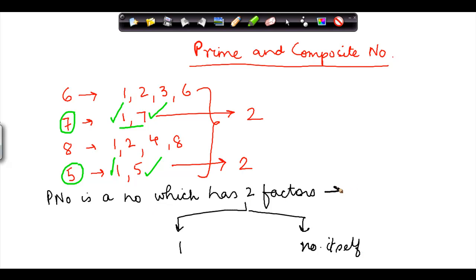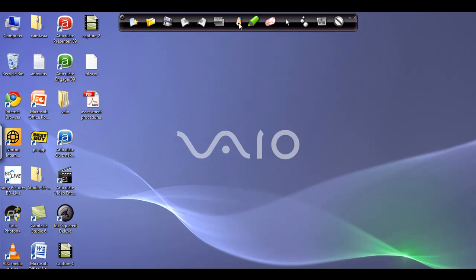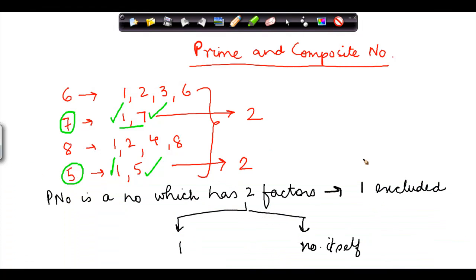Now when we say prime number, 1 itself is excluded. Why is 1 excluded? Because 1 has only 1 factor which is 1 itself. For 1, there is only 1 factor, there are no 2 factors, because the number itself is also 1. There is only 1 factor for 1, and therefore 1 is not a prime number.